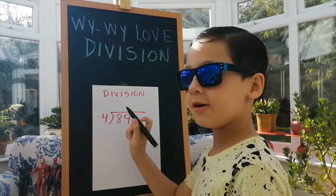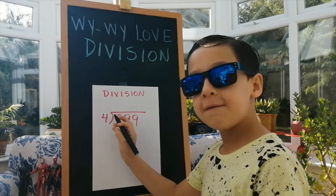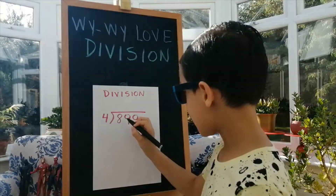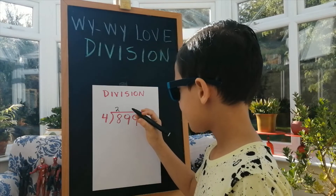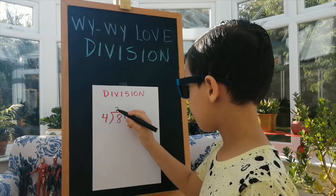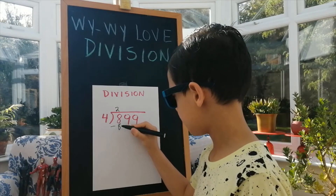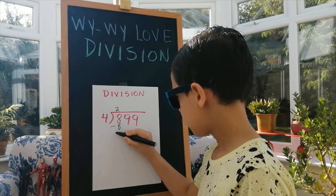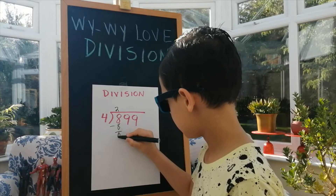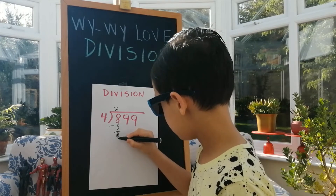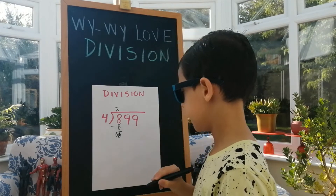And now we're going to do this one. How many 4's are in 8? There is 2. 4 times 2 is 8, minus 8 equals 0.